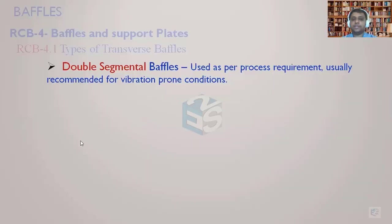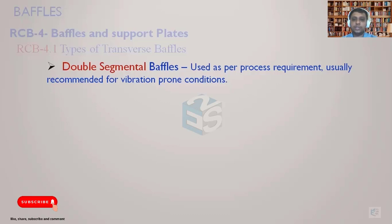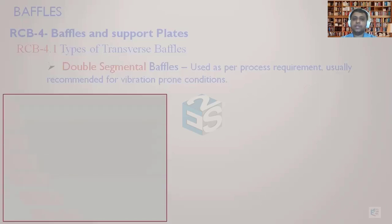Now the double segmental baffles. Single segmental baffles we have seen — there are three types of cut: horizontal, vertical, and the rotated one. Double segmental baffles are used as a process requirement, usually recommended for vibration-prone conditions. This is decided by the process based upon process requirements, residence time, and if vibration is observed — to reduce or remove that vibration. They might go for double segmental or triple segmental baffles. In steam applications where high velocities are present, double or triple segmental baffles are provided if the steam is on the shell side, along with an impingement plate.